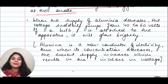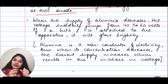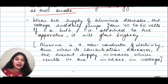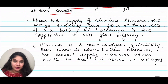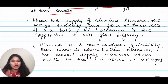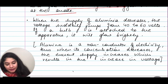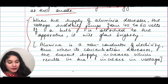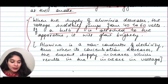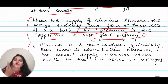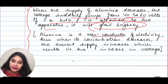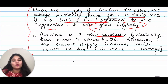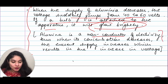When the supply of alumina decreases, the voltage suddenly jumps from 40 to 60 volts — if a bulb is attached to the apparatus, it will glow very brightly. Why? Alumina is a non-conductor of electricity. Thus, when its concentration decreases, the current supply increases, which further increases the voltage. This is an important reasoning question to remember.